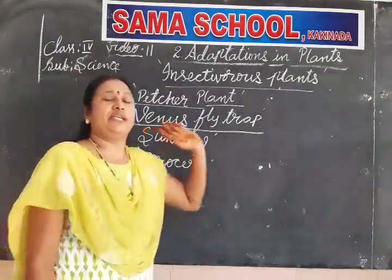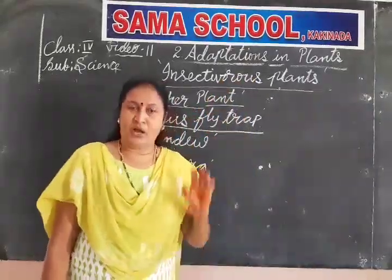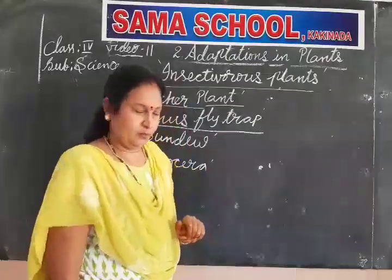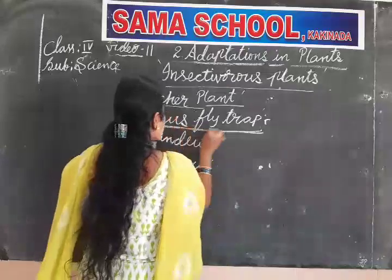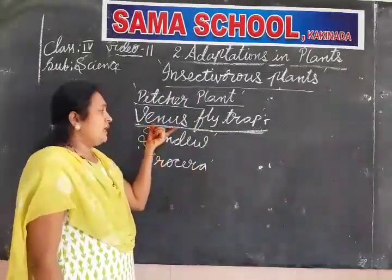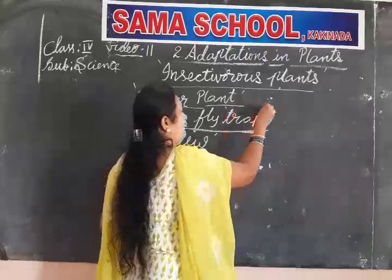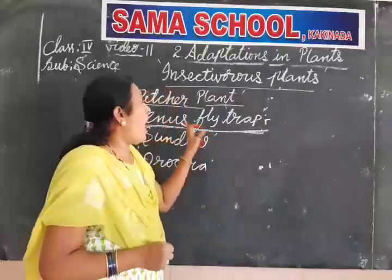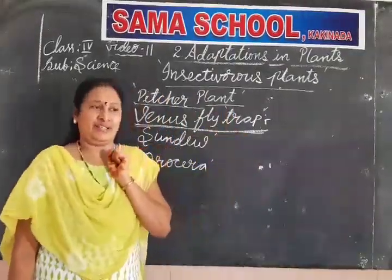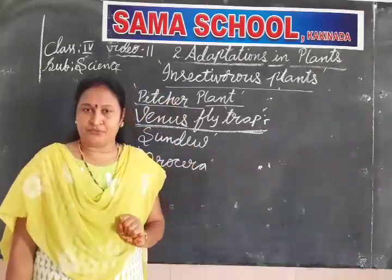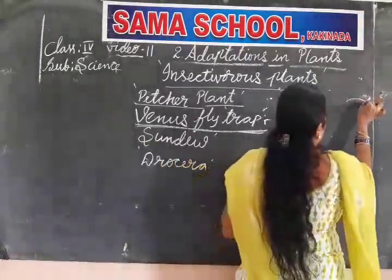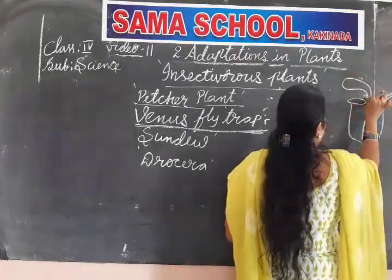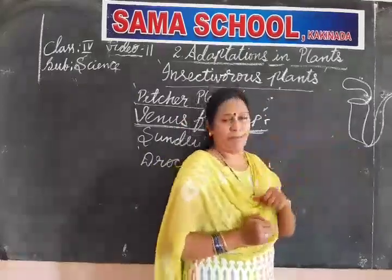How does Venus flytrap trap the insect? That we will discuss now. Venus flytrap — in the name itself there is 'trap'. Trap means to catch. So how does this plant catch the insect? In the pitcher plant, the shape is like a pod with a lid. That is the pitcher plant.